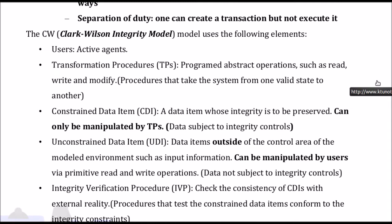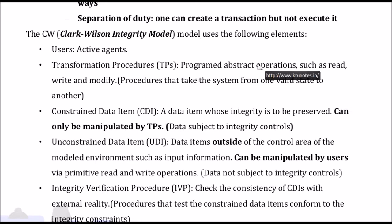The elements of the Clark-Wilson integrity model are: first, users, who are the active agents; second, transformation procedures (TP), which are abstract operations used for read, write, and modify operations written in a programming language; and third, constrained data items (CDI), which are objects whose integrity needs to be preserved. Fourth are unconstrained data items (UDI).